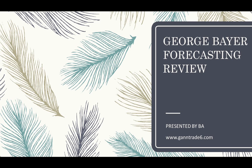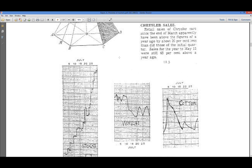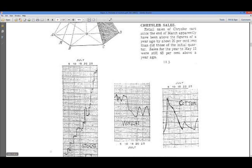Let's get started. This is July 1939, and as you can see he's got stocks going pretty much vertical towards the end of the month where it kind of goes sideways. Let's go take a look.